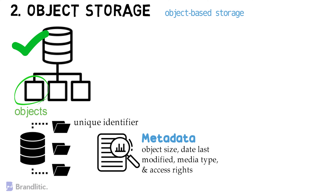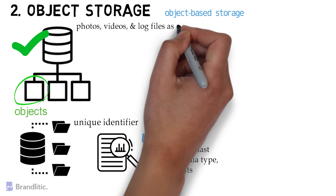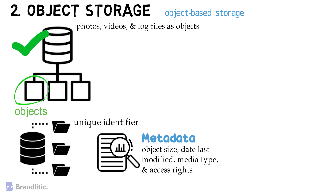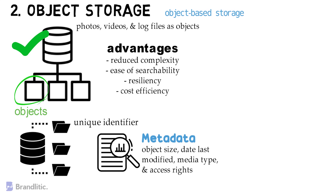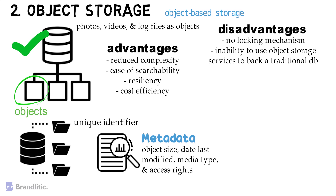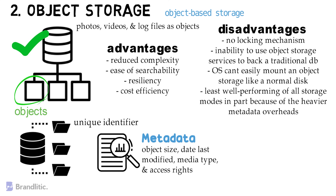The flat structure of object storage makes it efficient to store large quantities of data, and it is also possible to store any kind of data with it, be it photos, videos, and log files as objects. A few of the major advantages of object storage include reduced complexity, ease of searchability, resiliency, and cost efficiency. Object storage disadvantages include no locking mechanism, inability to use object storage services to back a traditional database, and operating systems can't easily mount an object storage like a normal disk. Additionally, object storage tends to be the least well-performing of all storage modes because of the heavier metadata overheads.